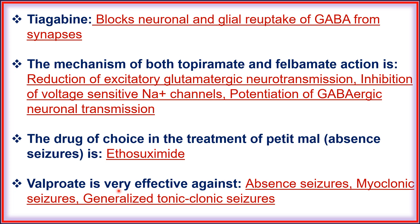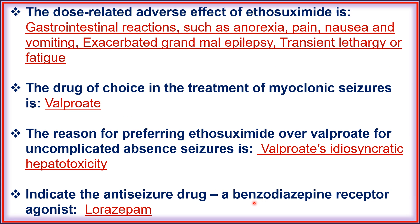Valproate is very effective against absence seizure, myoclonic seizure, and generalized tonic-clonic seizure. The dose-related adverse effects of ethosuximide include gastrointestinal reactions such as anorexia, pain, nausea, and vomiting, as well as exacerbated grand mal epilepsy and transient lethargy or fatigue.